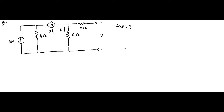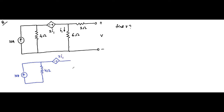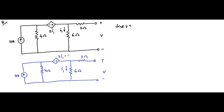Let us first redraw the circuit. We have a 10 ampere current source, a 4 ohm resistor, a dependent voltage source of minus plus 2i1, a 6 ohm resistor, and the current i1 flowing through it, and a 3 ohm resistor. The important thing is to highlight this dependent source — it is a current dependent voltage source, and this current i1 is the important parameter.